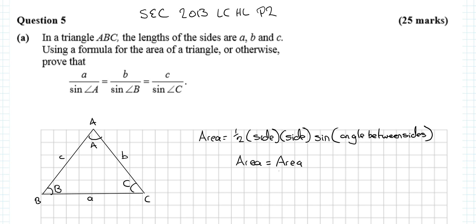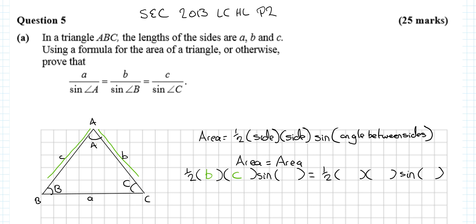Since area equals area for this triangle, we can write it out twice. In one scenario I'll deal with sides b and c, giving a half·b·c·sin A. In another I'll deal with sides a and c, giving a half·a·c·sin B.